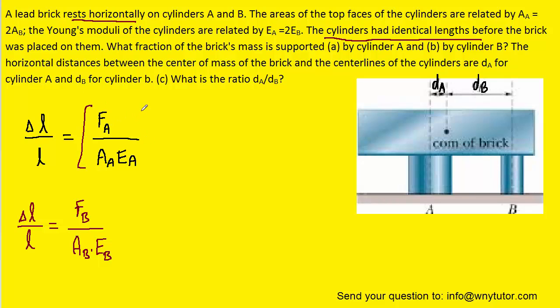We can set this quantity equal to its corresponding quantity for cylinder B. We're going to solve this equation for the ratio of FA to FB. First, we can multiply both sides by 1 over FB, and then multiply both sides by this term so it cancels on the left and shows up in the numerator on the right.